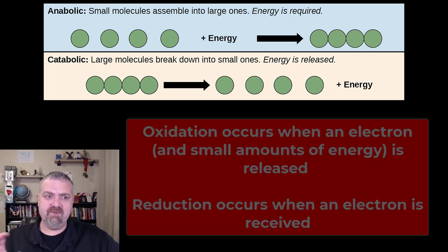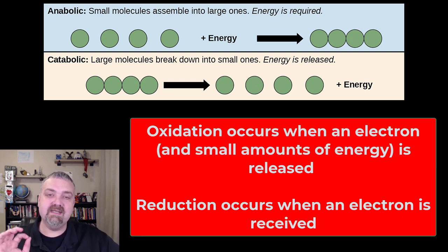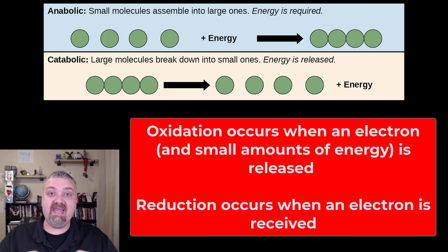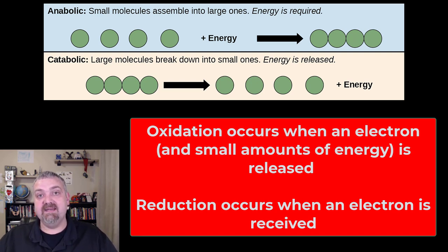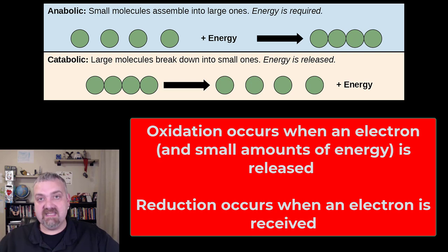Other terms you're going to hear a lot in this unit are oxidation and reduction — this is the transfer of electrons. The key thing to remember is when you transfer an electron, you transfer a little bit of energy with it. This transfer of electrons all throughout your metabolism is what leads to the steady accumulation of energy. That energy is going to be used to turn ADP, adenosine diphosphate, into ATP, adenosine triphosphate. Oxidation is when you release an electron, and with that release a little bit of energy is released or transferred as well.